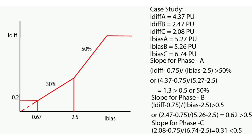For phase C, using the same formula — (I_differential minus 0.75) divided by (I_bias minus 2.5) — which must be greater than 0.5: the differential current is 2.08 per unit and bias current is 6.74 per unit. The slope equals (2.08 minus 0.75) divided by (6.74 minus 2.5), which equals 0.31 — less than 0.5 or 50%. Therefore, the differential current for phase C remains in the restraining region.